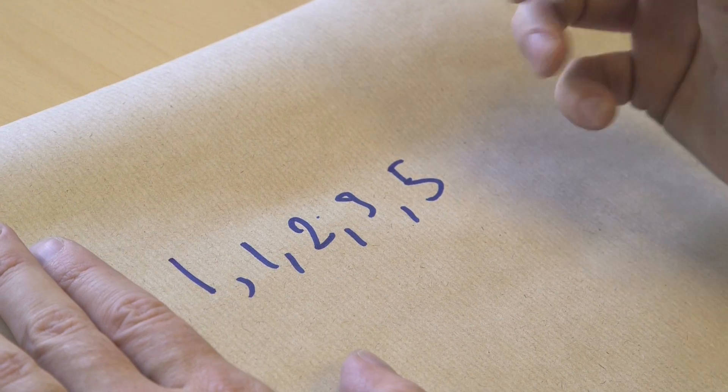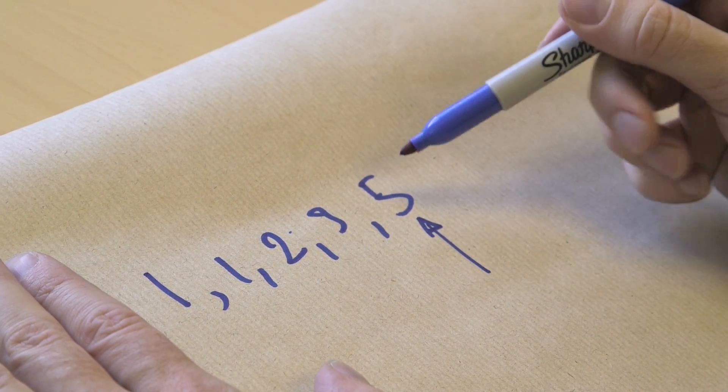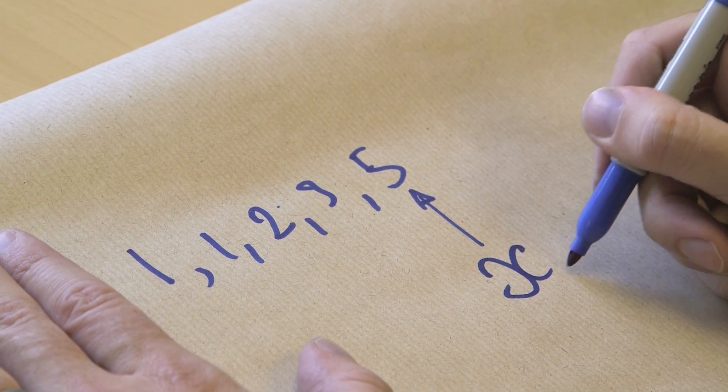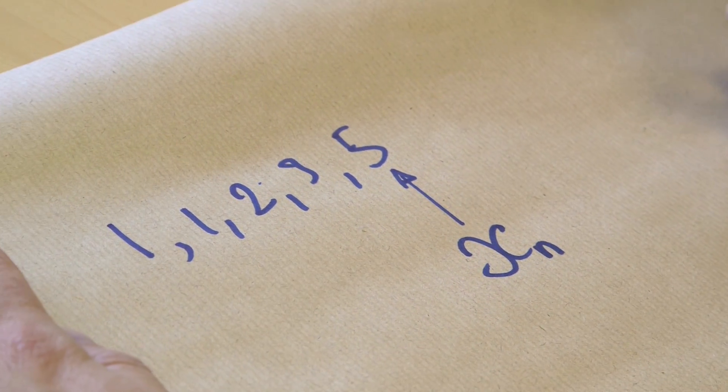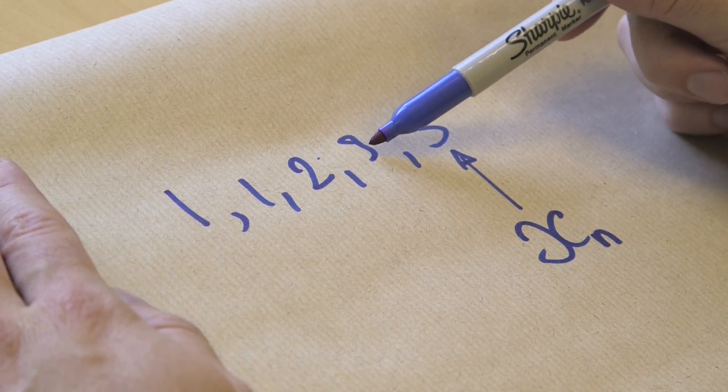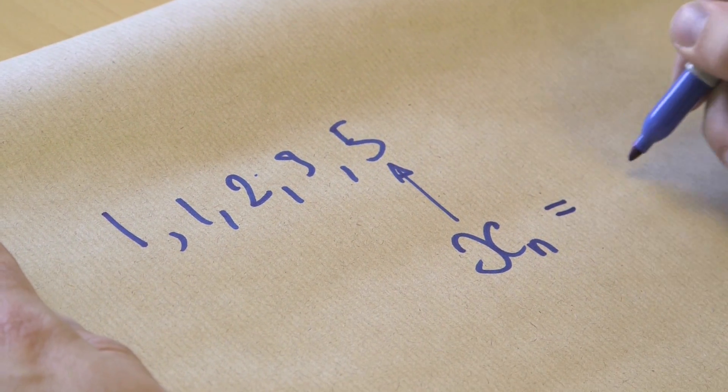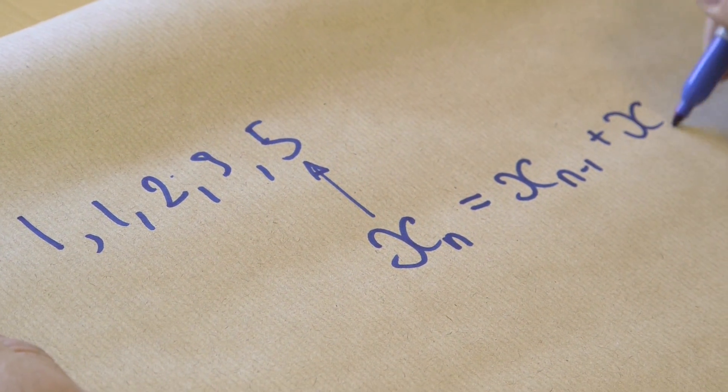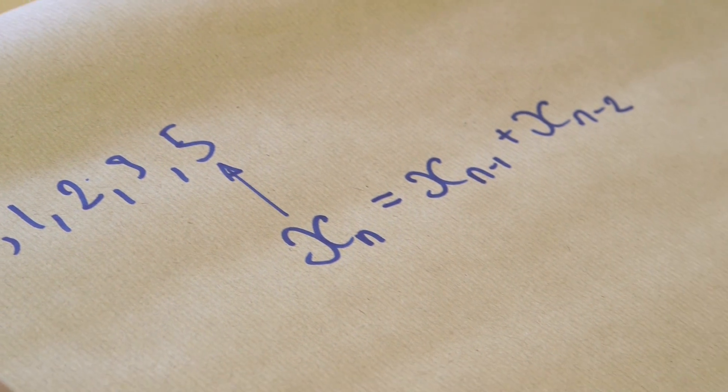The rule is each number here equals the ones before it. So if this was the nth number, and we're going to call that xn for the nth number, it equals the one before it plus the one before that. So it equals xn minus 1 plus xn minus 2. So that's our defining thing.